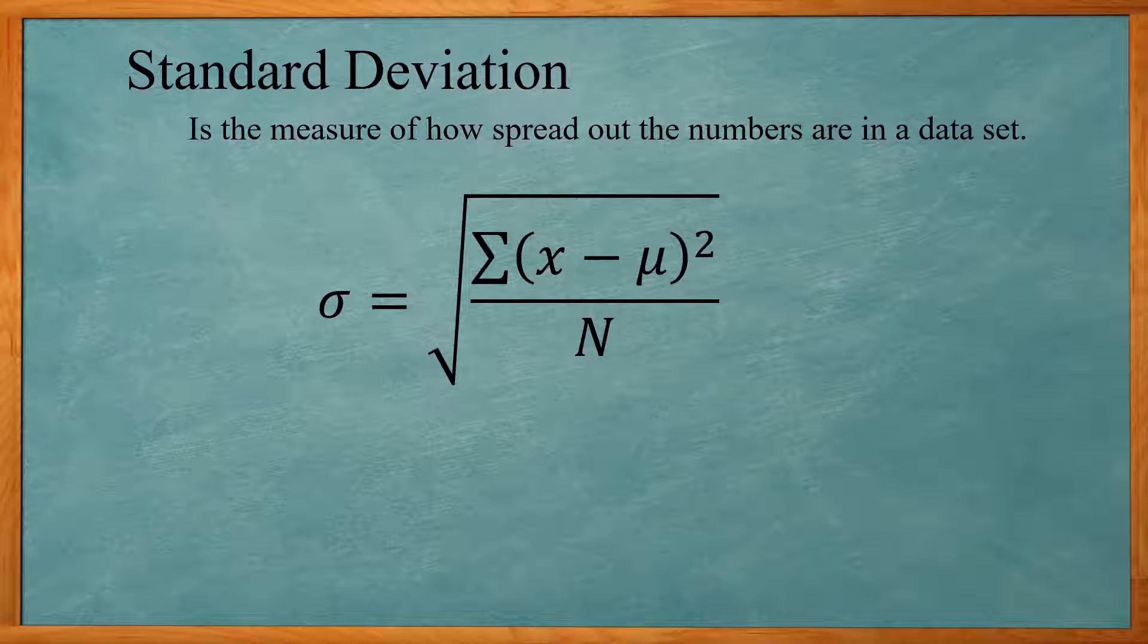So if your numbers are really spread out, your x minus mu will be quite large. Then take the square of that, then you divide by n, take the square root, that will make your standard deviation bigger. So the more your data points are spread out from the mean, the higher your standard deviation will be. If they are closer together, then your standard deviation will be a lot smaller.